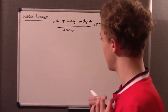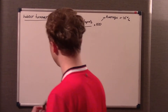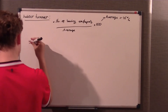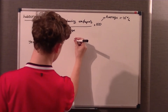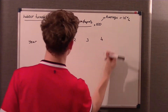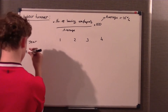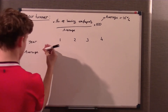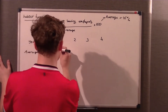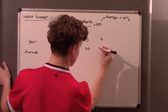Now we're going to do a few examples. I'll create a little table: Year 1, 2, 3, 4. The average number of employees: 40, 41, 40, and 41 again. And the number of employees that left: 1, 2, 3, 5. You can see the number leaving is slowly going up.